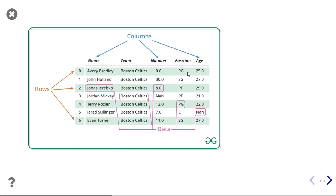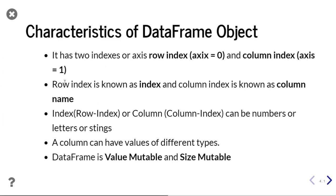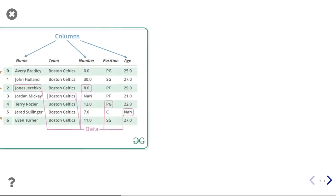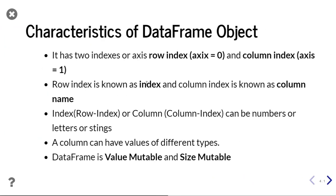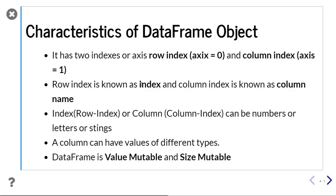Rows are horizontal, so they represent 0. Just remember: column is vertical, that means 1; rows will be 0. Row indexes are known as index and column indexes are known as column name. So from now onwards, we will call 0, 1, 2, 3, 4, 5, 6 the row indexes, and name, team, number, position, and age will be called column names. We will refer to row indexes simply as index and column indexes as column name.